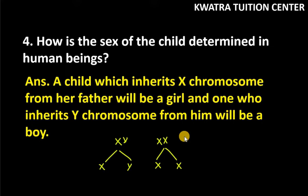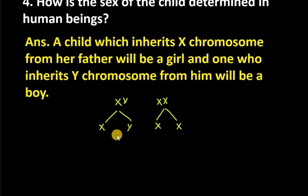Now, if I make this recombination square, then we understand that if it is XX, then the offspring will be a girl. If it is X and X, then the offspring will be a girl.